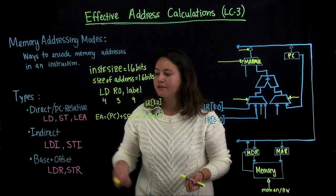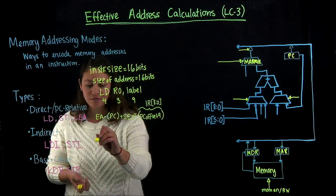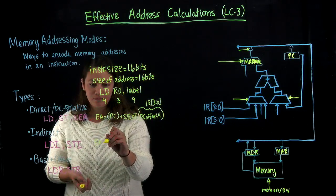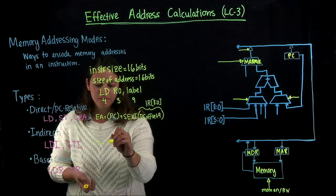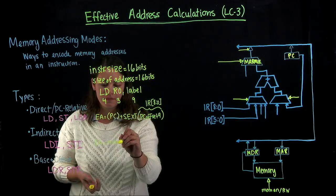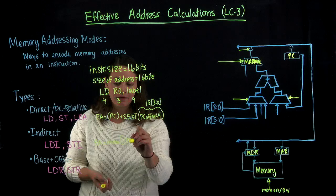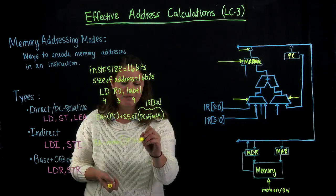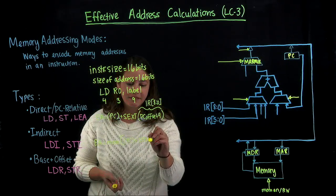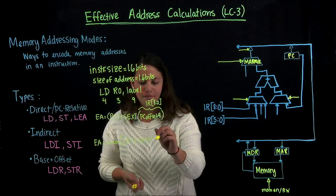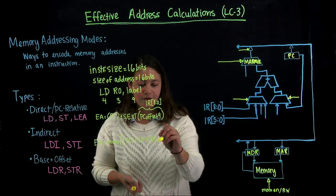So for indirect, the effective address is going to be the memory of the contents of the PC plus the sign extended PC offset 9.